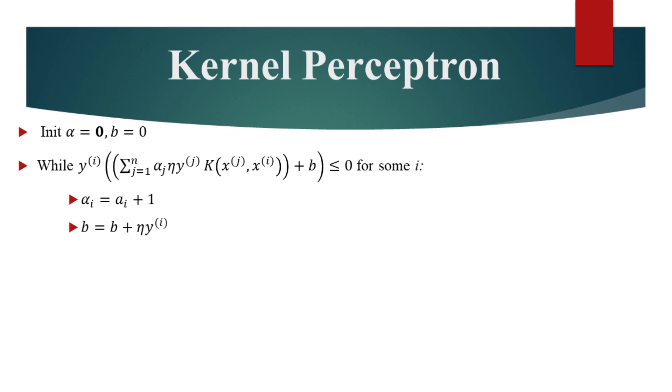Let's quickly rewrite the whole perceptron algorithm using this trick. We initialize the variables to zeros and as long as any data point is misclassified, we increment the corresponding element of alpha and update b.